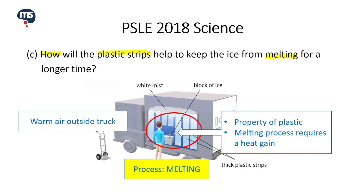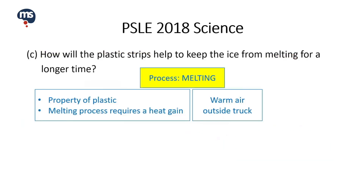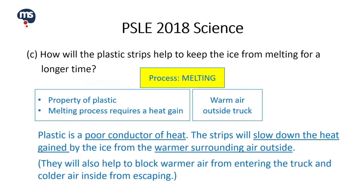The second concept is about the process of melting. Melting refers to a change from solid to liquid and it requires a heat gain in the process. Let us take a look at the answer. Plastic is a poor conductor of heat. The strips will slow down the heat gain by the ice from the warmer surrounding air outside. The plastic strips also help to block warmer air from entering the truck and cold air inside from escaping.